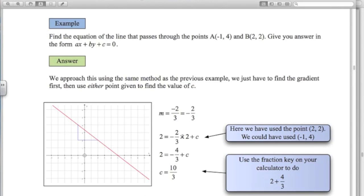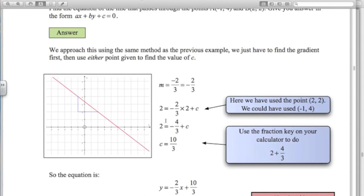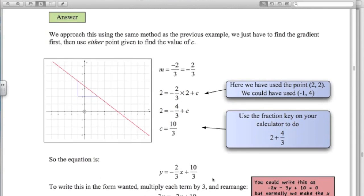2 plus 4 over 3. And when you're multiplying here, you just multiply the top lines. So there's my equation. Negative 2 thirds X plus 10 over 3. But we want it in this particular form up here. Ax plus B, Y plus C equals 0. So just a little bit of algebraic manipulation.